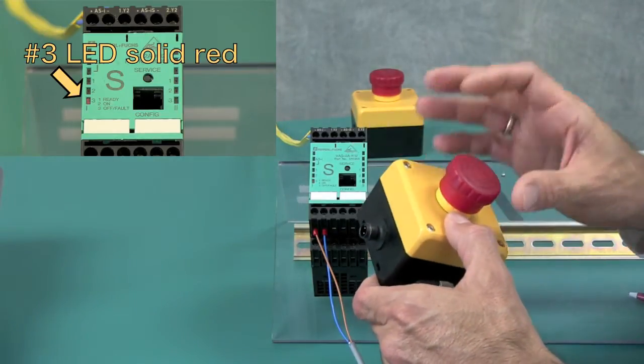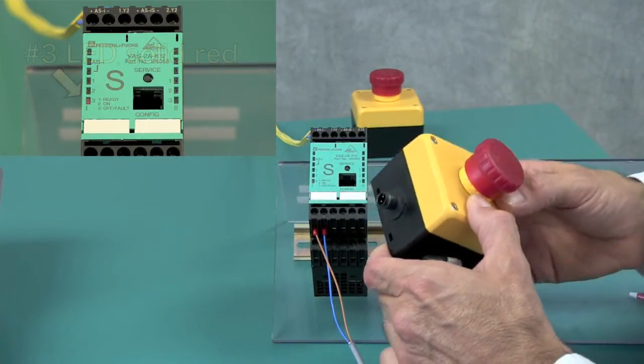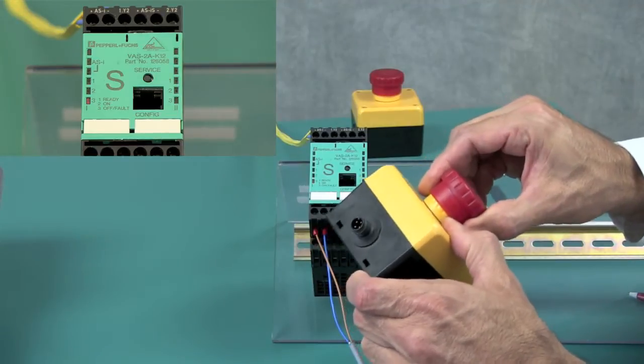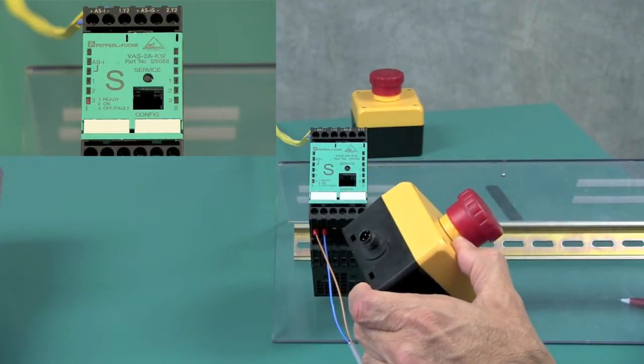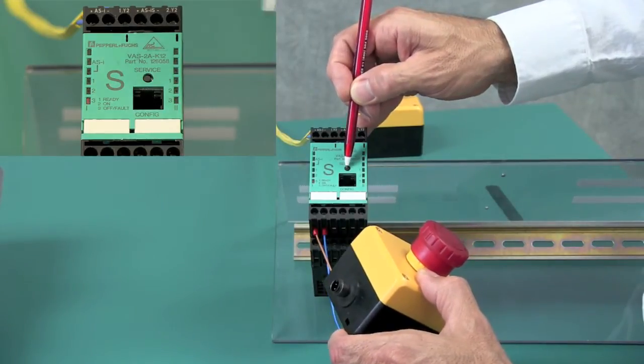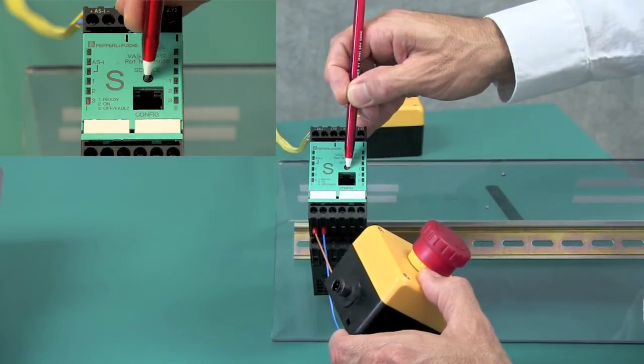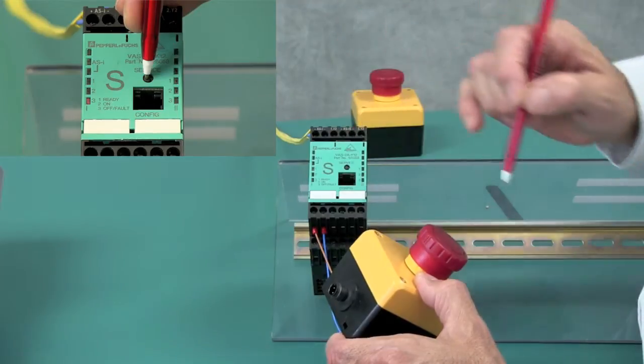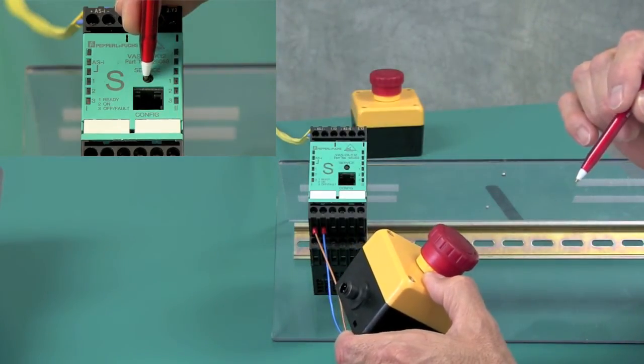This is my replacement device. It's currently at address 0 and the e-stop is in the release state. Before reconnecting, I have to push the service button lightly until the number 1, 2 and 3 LEDs are cycling through their colors.